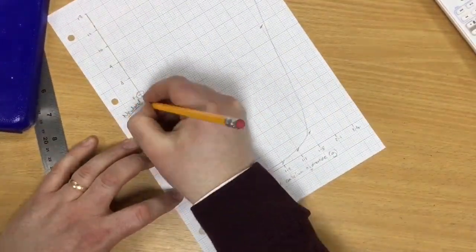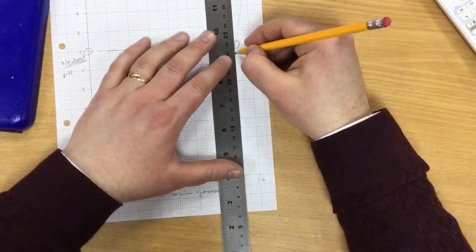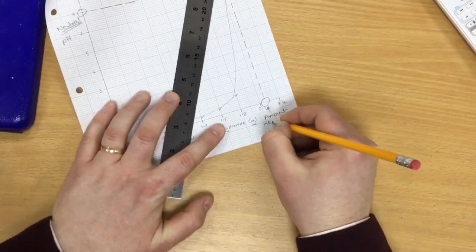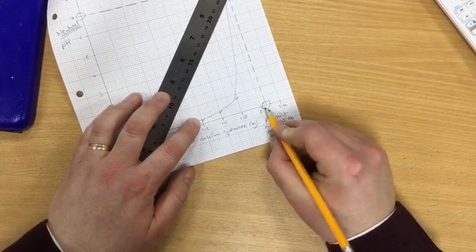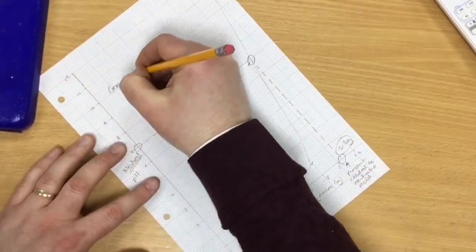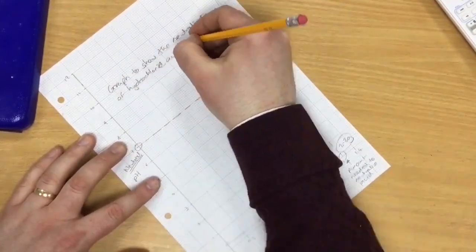We can then plot our points and create a curve of best fit. For this particular experiment we are interested in the mass of calcium hydroxide required to neutralize the acid. To do this a line can be drawn from the axis and intersected with the curve of best fit.